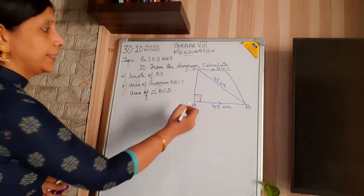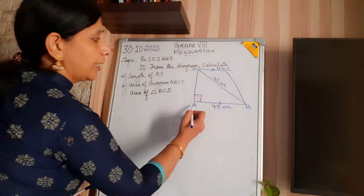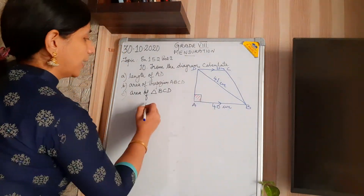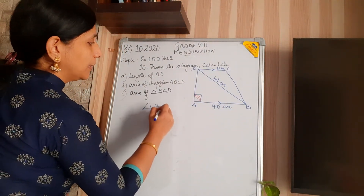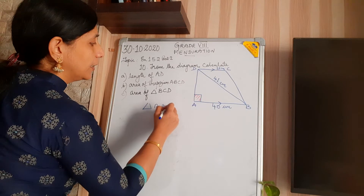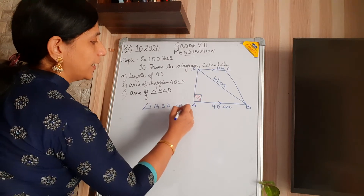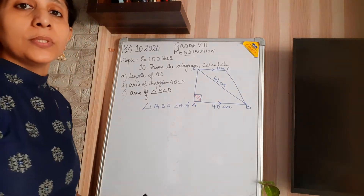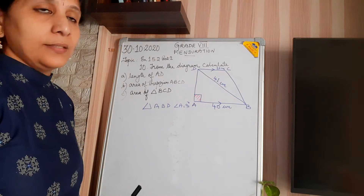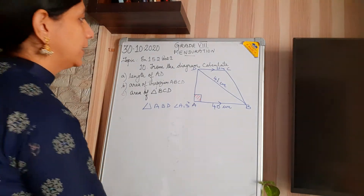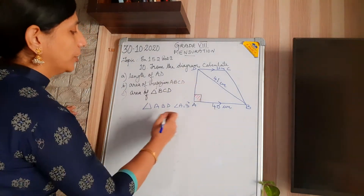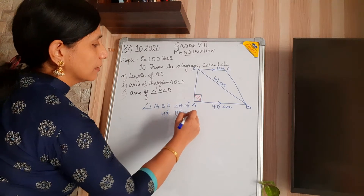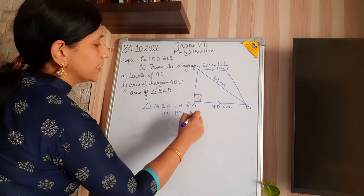See here, this is 90 degrees and this is the base. So if I am considering the triangle ABD, angle A is 90 degrees. So you can use Pythagoras' property. That is: hypotenuse squared equals base squared plus AD squared.